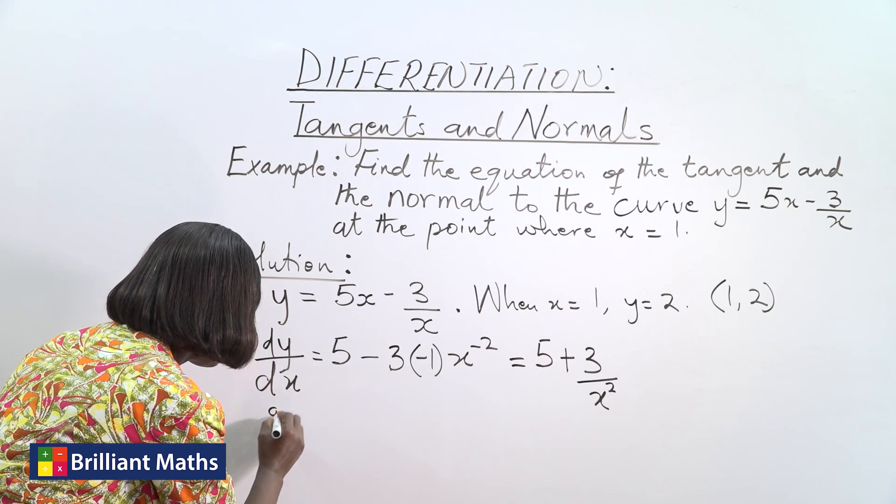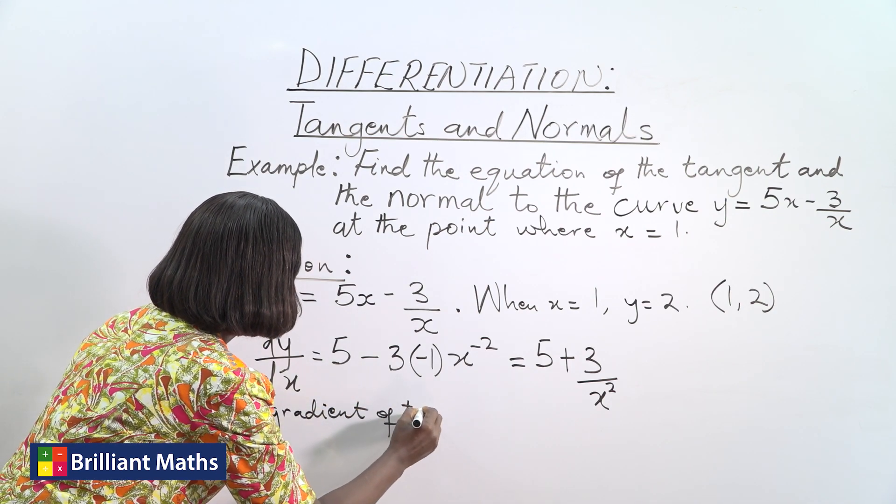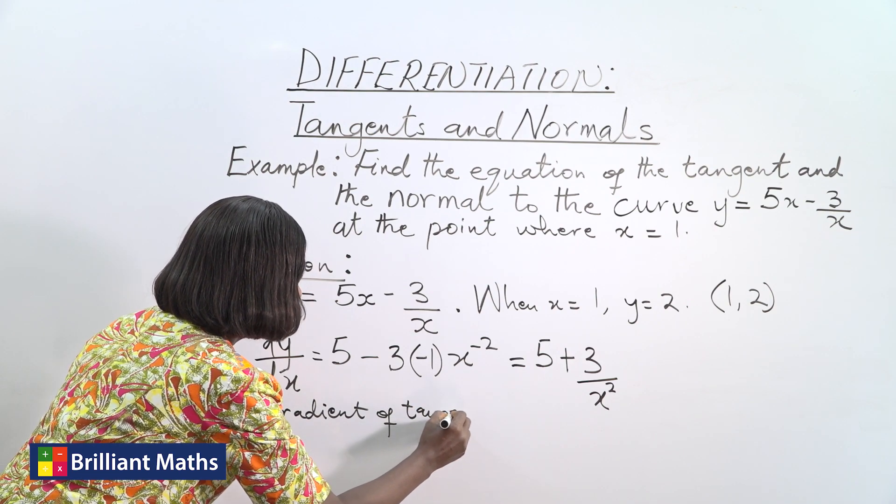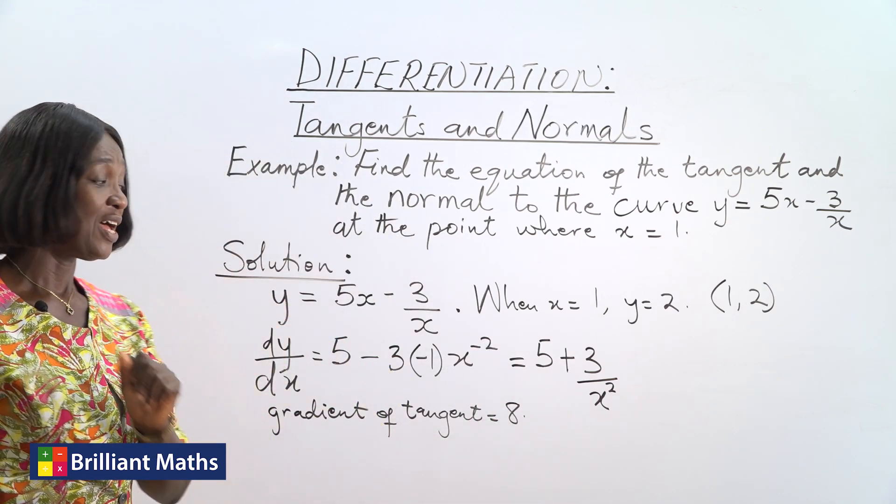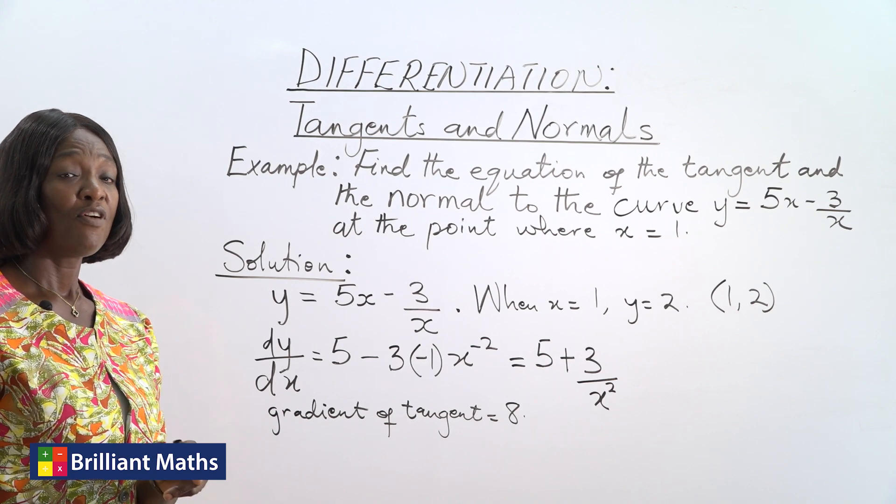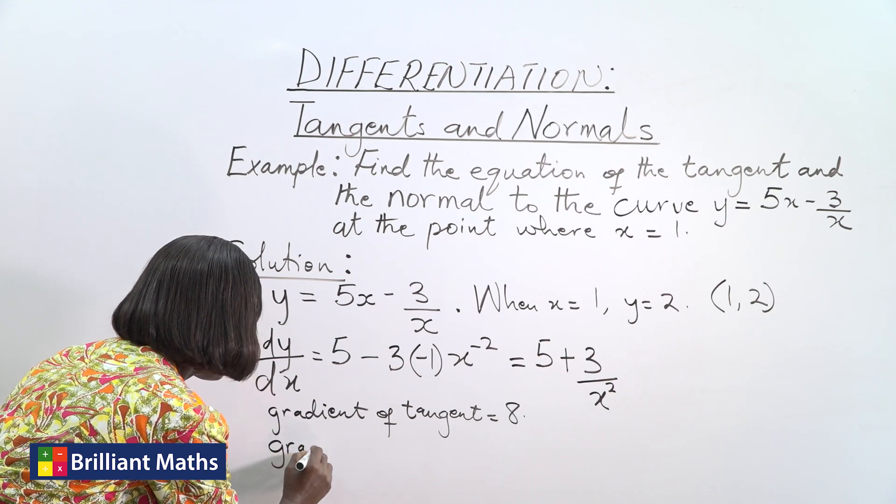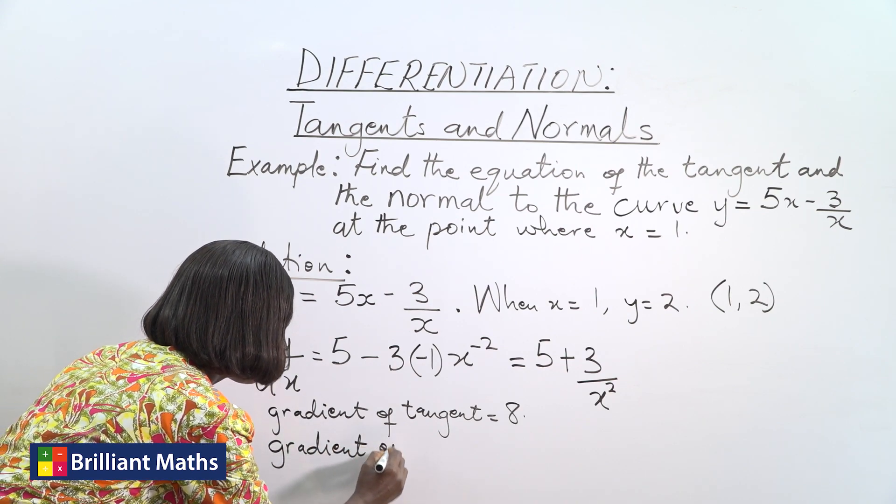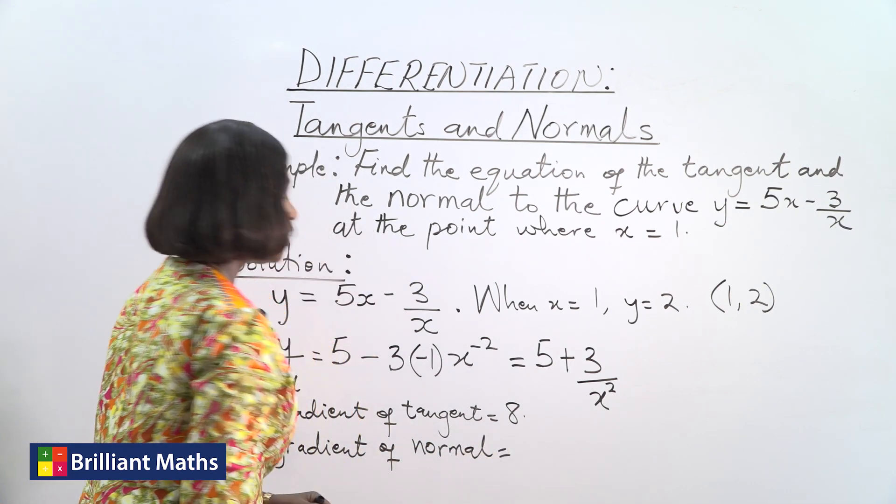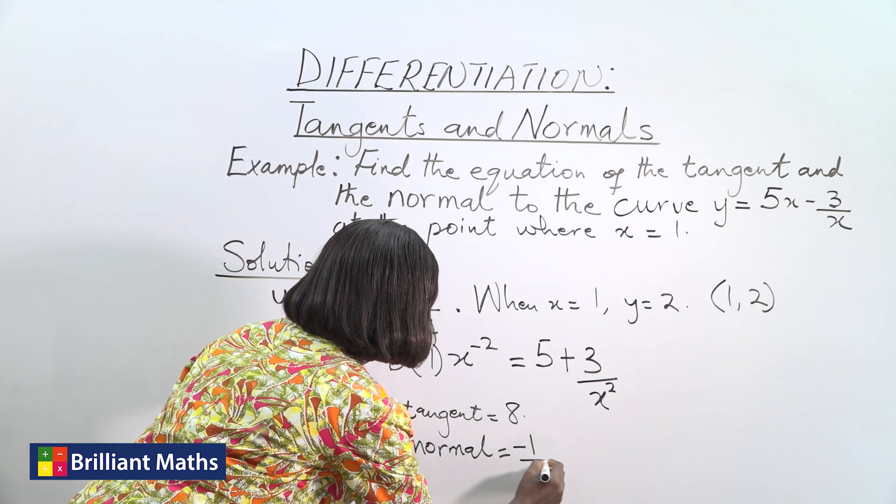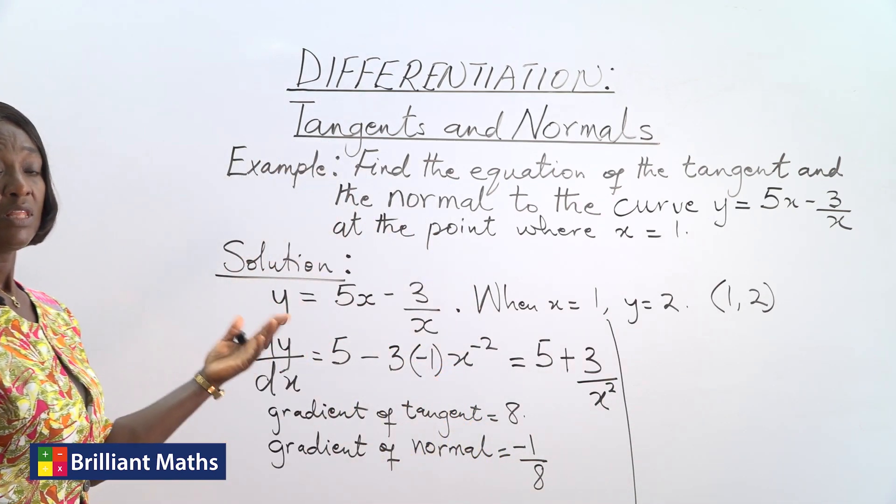That implies that the gradient of the normal at that same point will be negative 1/8.